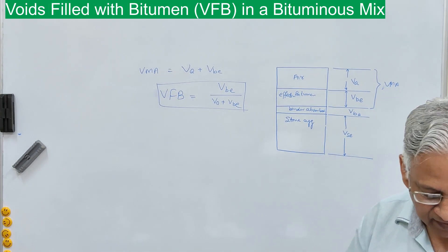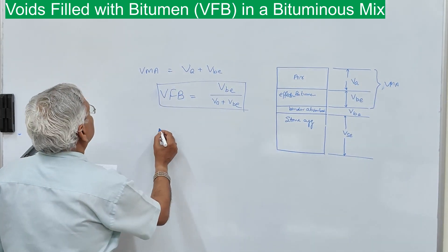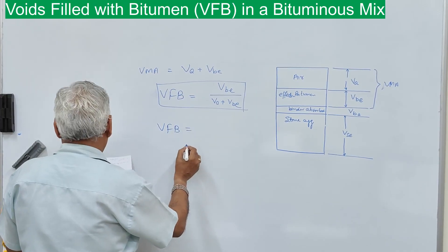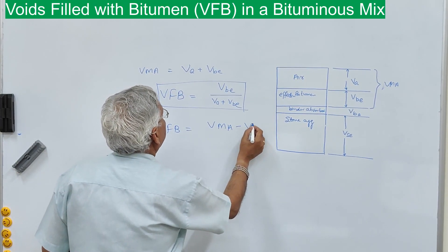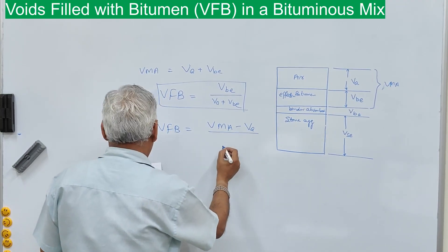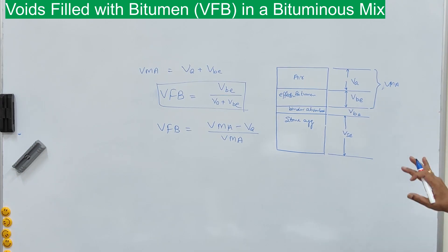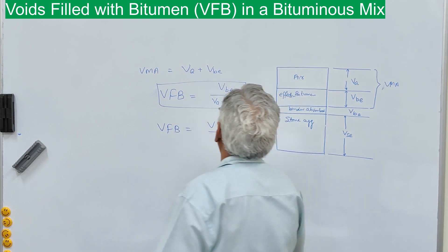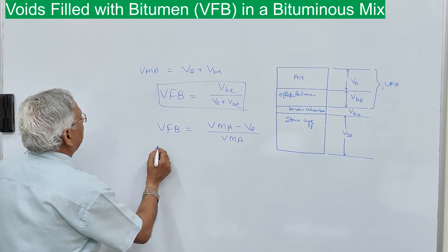More conveniently, VFB or VFA can also be calculated as VMA minus VA (air voids), divided by VMA. So let us take one example: a bituminous mix is prepared with 5.3 percent binder content.